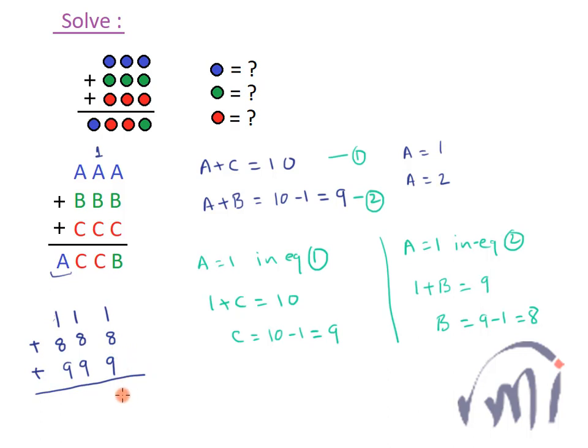so 9 plus 1 is 10 plus 8 is 18, 1 carried forward and 9 plus 8 plus 1 is 18 plus 1 will be 19. Again 1 will be carried forward. Again this will be 9 plus 8 plus 1, 18 plus 1, 19. So I have to write it like this.